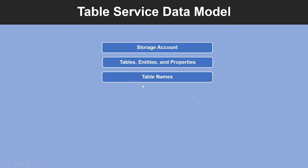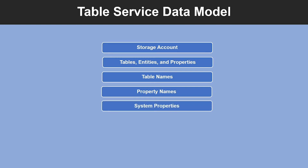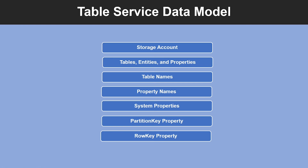Table names have to follow certain rules: table names must be unique within an account, may contain only alphanumeric characters, and cannot begin with a numeric character. Then we have property names — property names are case-sensitive strings up to 255 characters in size and should follow naming rules for C# identifiers. System properties: an entity always has either a partition key property, row key property, or timestamp property. Tables are partitioned to support load balancing across storage nodes. A table's entities are organized by partition, and a partition is a consecutive range of entities sharing the same partition key value.